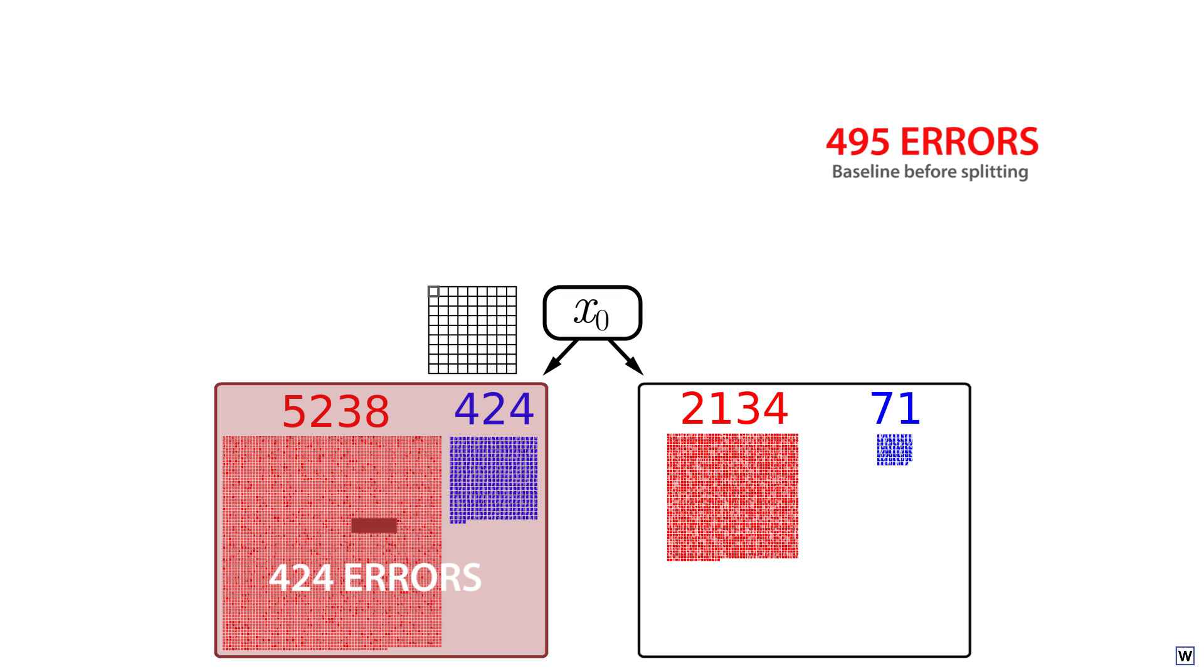Our right node also contains a majority of negative examples, so we'll also give this node a negative label, resulting in a misclassification of the 71 positive examples in this node. It may seem strange that we've assigned both nodes of our tree a negative label. It's not much of a tree.